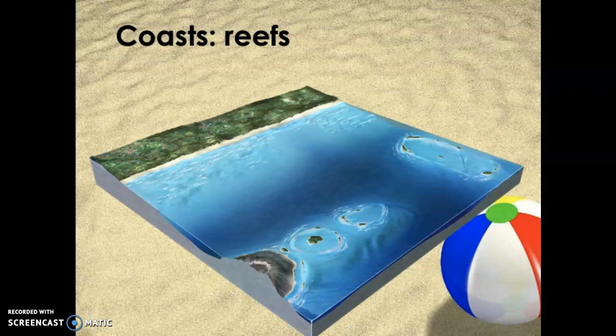It turns out that shell material also becomes part of the sedimentary deposits we find on the continental shelves. Most of the organisms in the ocean that are making shells are doing it with calcium, carbon, and oxygen — they make the mineral calcite, also called calcium carbonate, CaCO₃. That's what corals use, that's what clams use. Most of the things you see in the ocean are using that to make their shells.